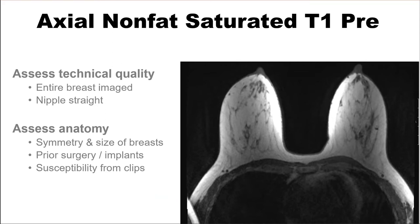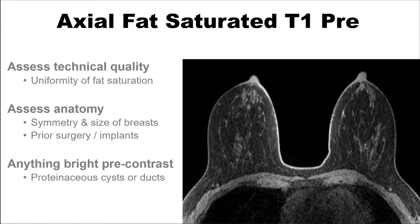The axial non-fat-saturated T1-weighted pre-contrast image — you're looking for technical quality. Is the entire breast imaged, and is the nipple straight? If the nipples are not pointing forward, it can make determining the exact location of an abnormality very difficult as the anatomy gets distorted. Also, on the non-fat-saturated image, look for the size and symmetry of the breasts. Look for any prior surgery, implants, or biopsy clips, as susceptibility artifact is highlighted on this non-fat-saturated sequence.